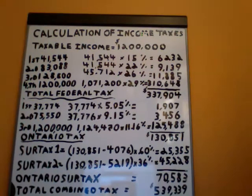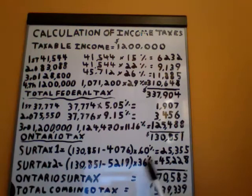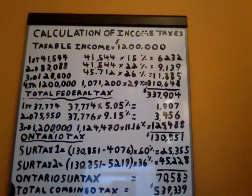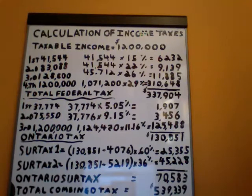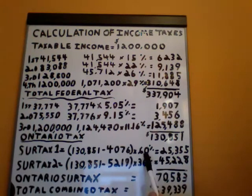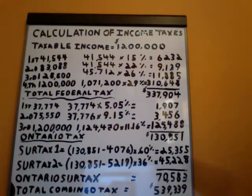Now what we've got to calculate is the Ontario surtaxes, which work into our calculation. This is quite tricky, and the Ontario tax figure is key because it's used in the formula for the Ontario surtax. For surtax number one, you have a threshold amount which starts at $66,514. The Ontario surtax that would be calculated on $66,514 of taxable income would work out to $4,076. We deduct that from the $130,851, and the difference is multiplied by 20%, giving you surtax number one of $25,355.